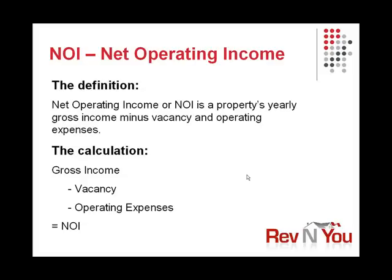The first is NOI, or Net Operating Income. The definition simply is it's a property's yearly gross income minus vacancy and operating expenses. It's an indication of what your property will cash flow at with no financing in place. The calculation is gross income minus any vacancy, or apply a vacancy factor if you didn't have vacancy, minus operating expenses — everything except for your financing costs — and that'll give you your NOI.